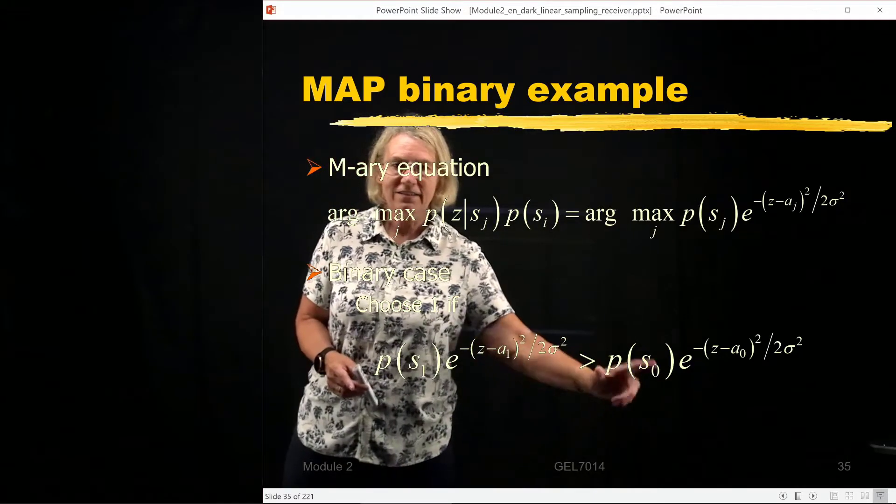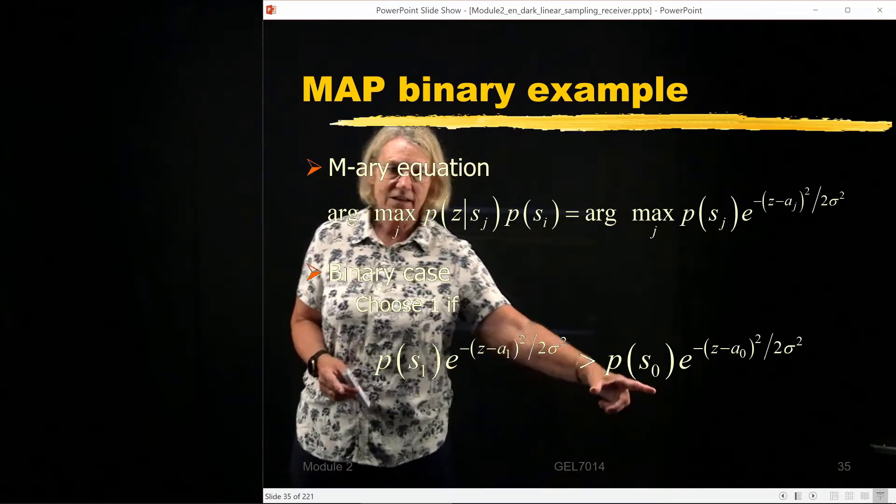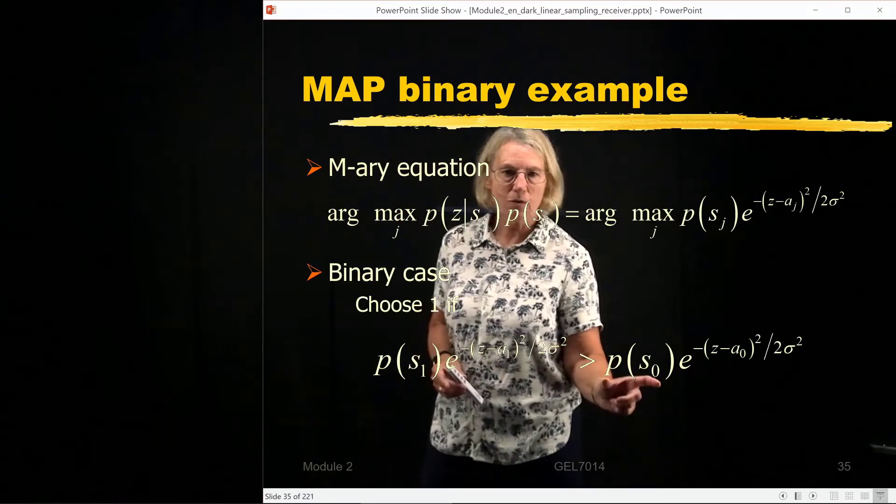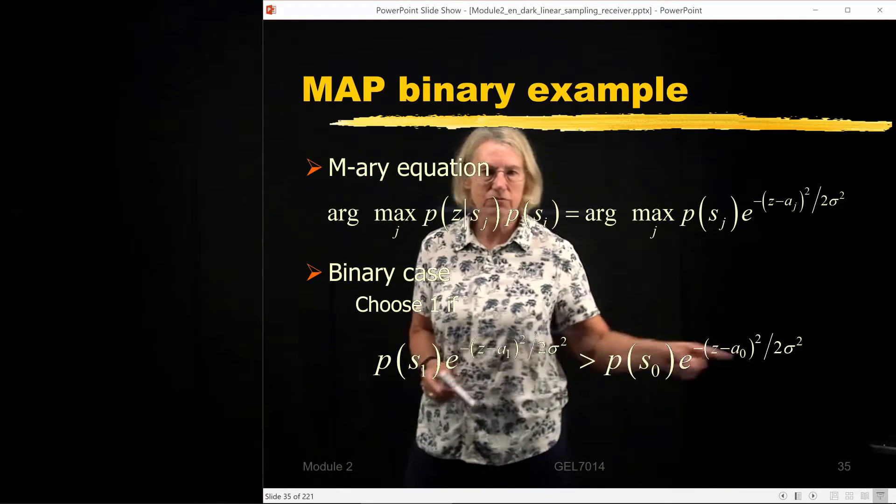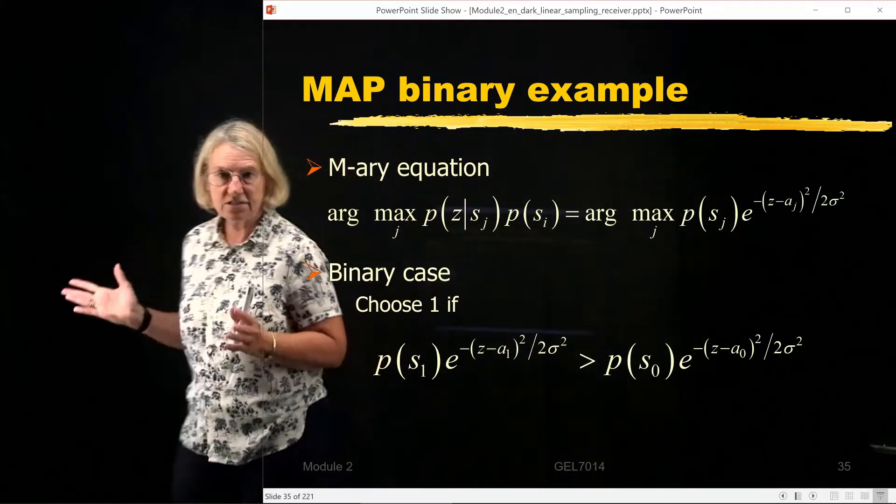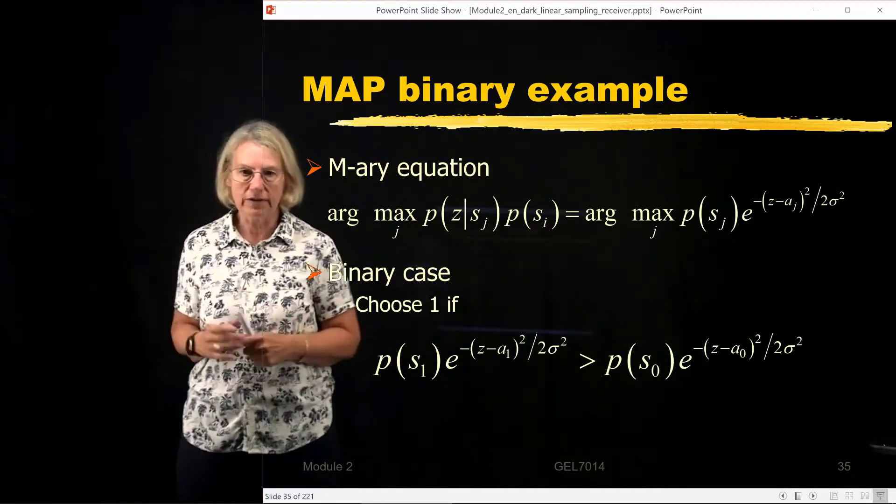If it's greater than the weighting of the zero, logical zero probability, a priori probability, by its density function. Of course there was a factor of 1 over the square root of 2π sigma, but it doesn't change the sense of the inequality, so we've gotten rid of that.